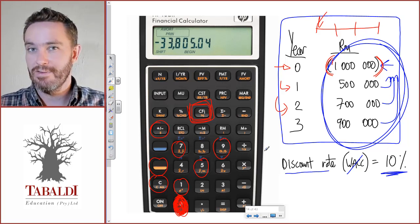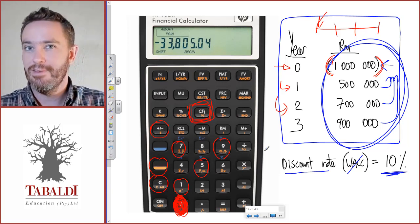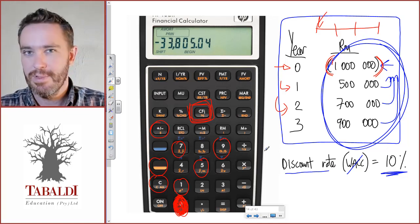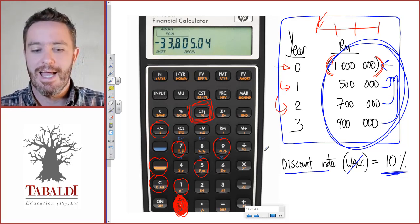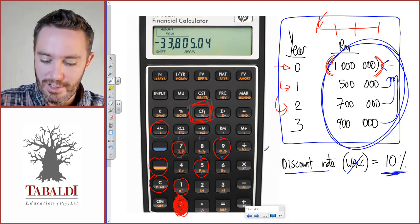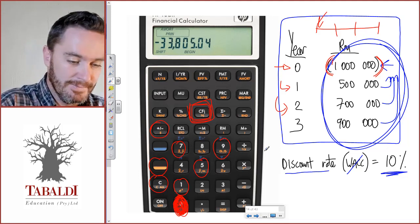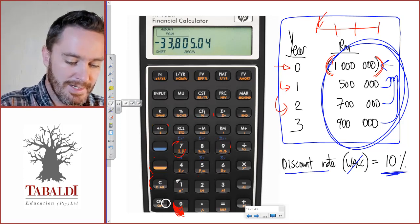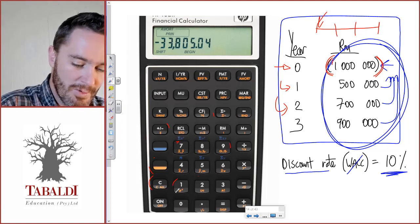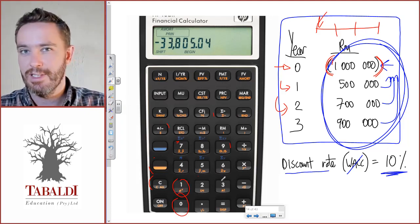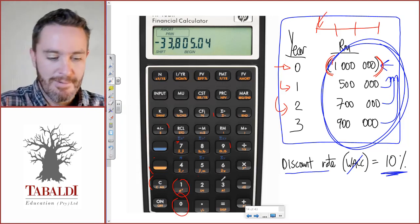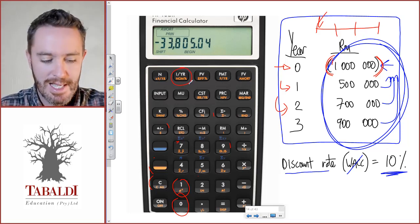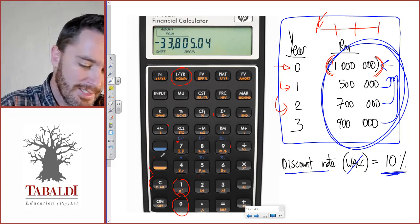Now we've put in all our cash flows. It'll quickly pop up three CF, showing the third year's cash flows has been put in. Now we have to include the discount rate. Type in one zero—you don't have to say percent—and then press the i/yr button for our discount rate.